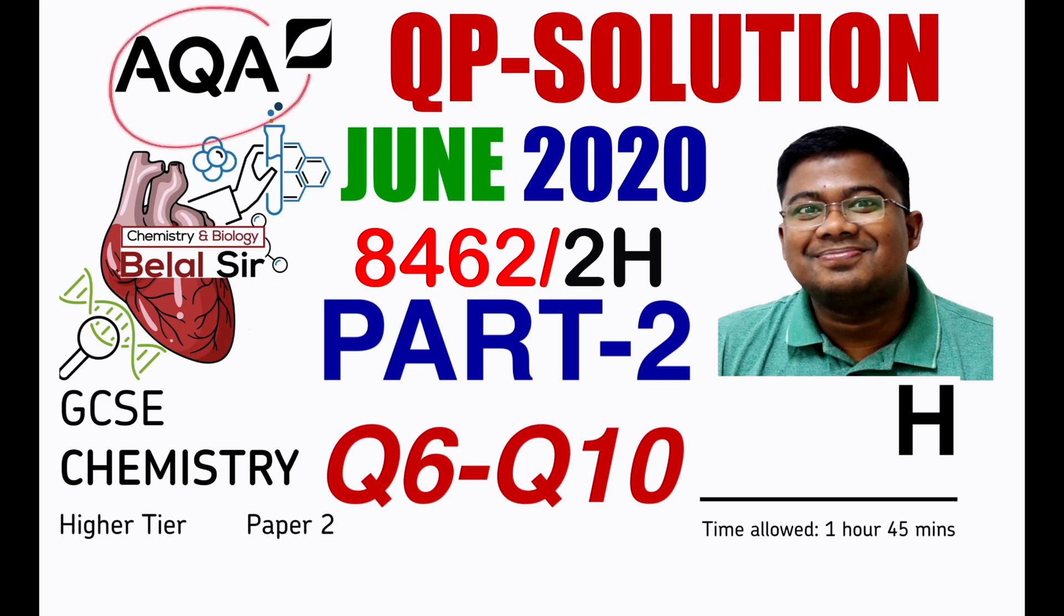Hi everyone. Today we're going to be solving AQA GCSE chemistry higher tier paper 2, June 2020. In this particular question paper we're going to be solving from question number 6 to question number 10. This is part 2 of the series.